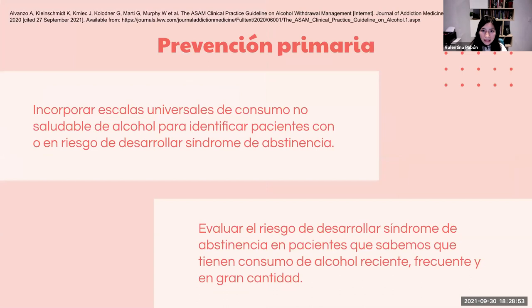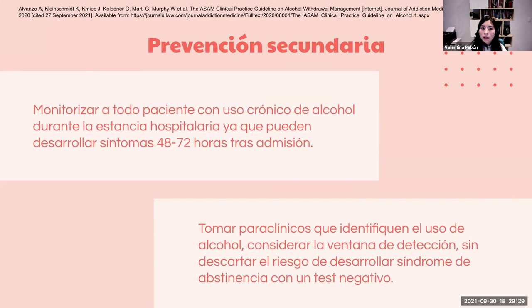En prevención primaria, se recomienda incorporar escalas universales de detección de consumo no saludable de alcohol para identificar pacientes en riesgo de síndrome de abstinencia, y evaluar el riesgo en pacientes con consumo reciente, frecuente y en gran cantidad que planeen dejarlo o reducirlo. En prevención secundaria, es muy importante monitorizar a todo paciente con uso crónico de alcohol durante la hospitalización, ya que puede desarrollar síndrome de abstinencia al no tener acceso a bebidas alcohólicas. También se deben tomar paraclínicos como alcohol en orina o sangre, considerando la ventana de detección.